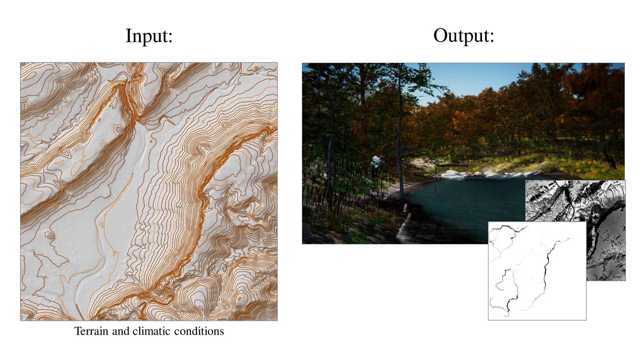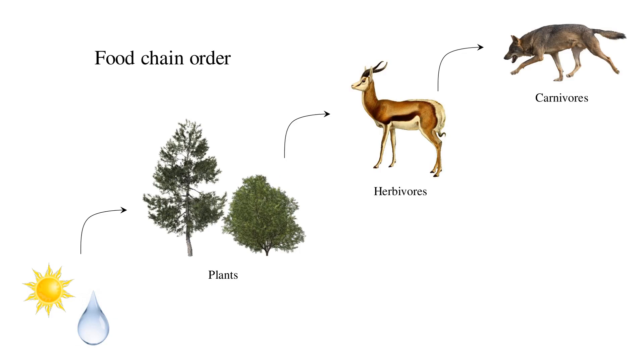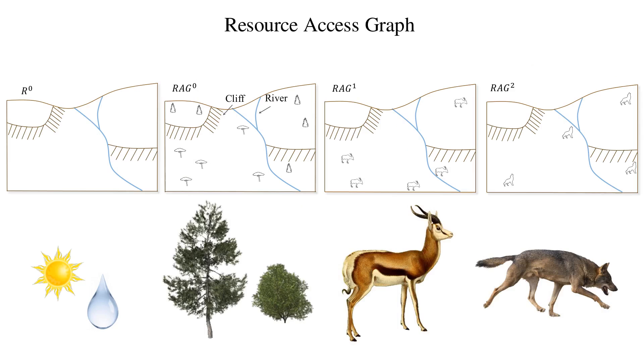We alter the species by food chain dominance: plants, herbivores, and carnivores. We have developed a new data structure called the resource access graph, which encodes the interactions between animals at different food chain levels.